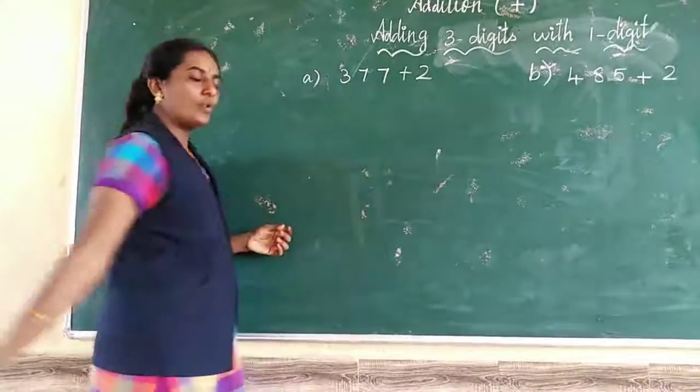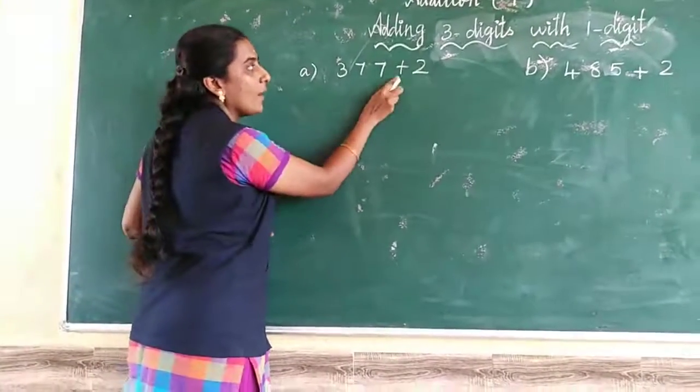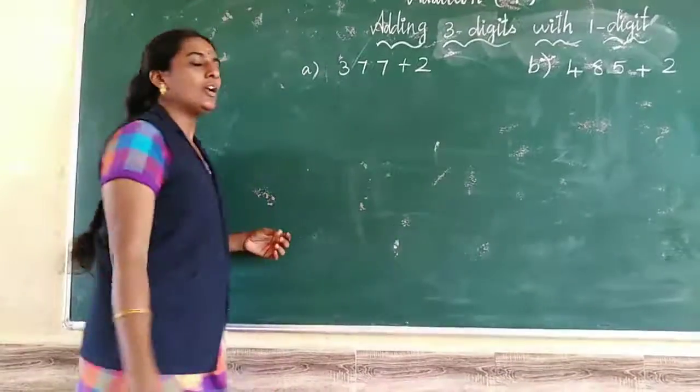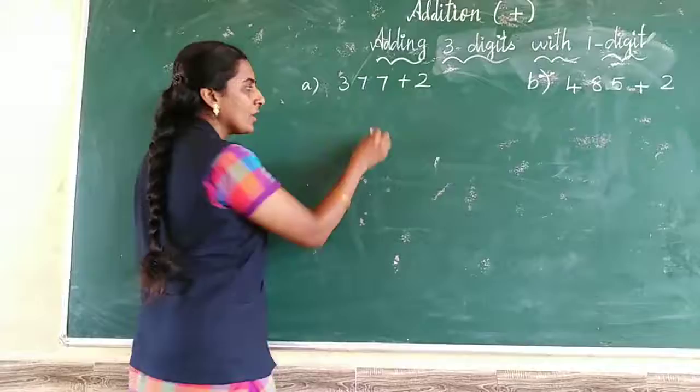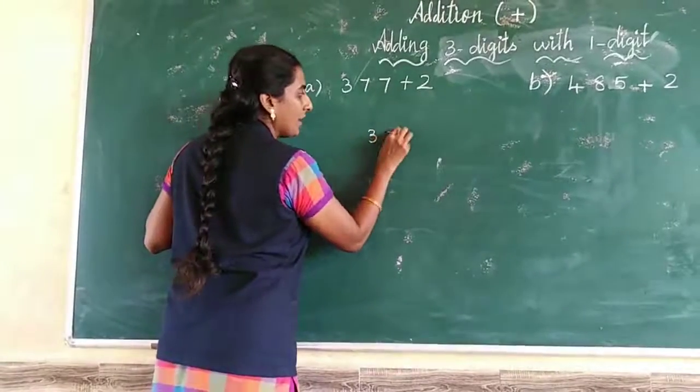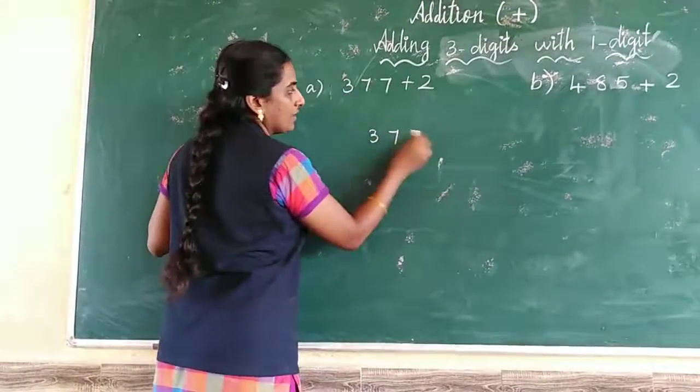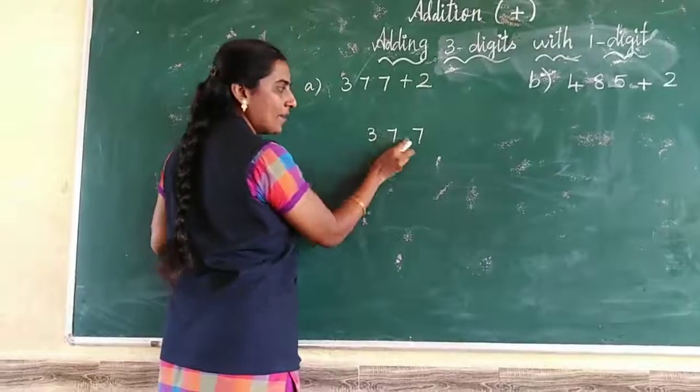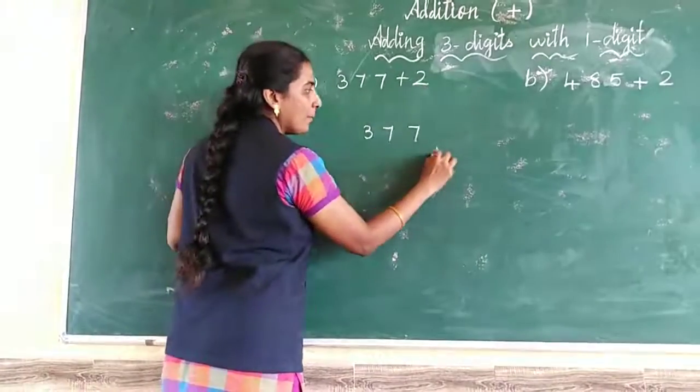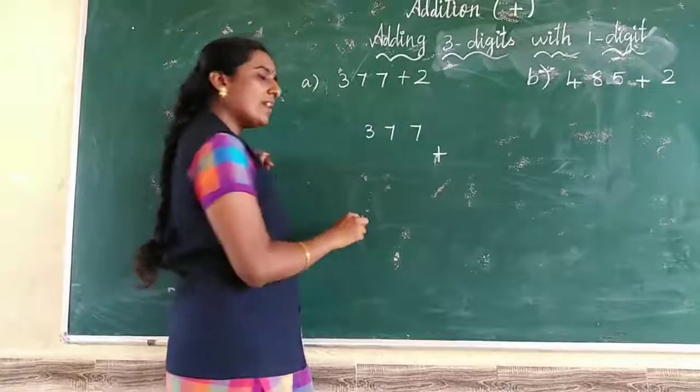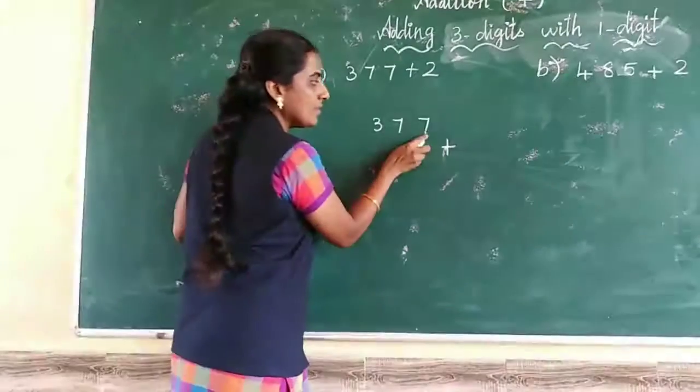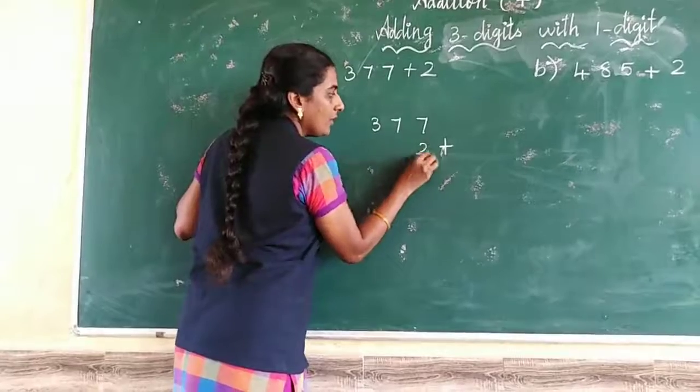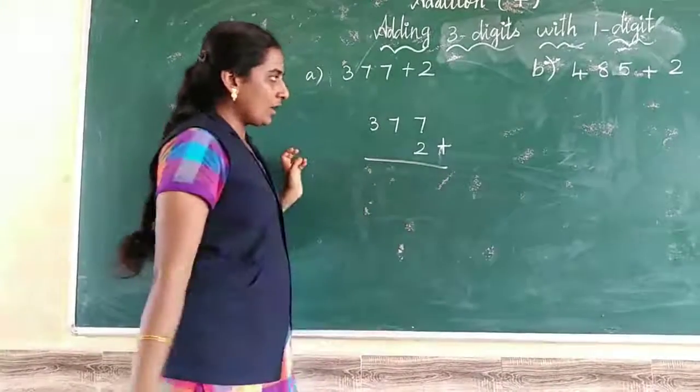377 plus 2. We are doing the column method. First write the first number, 377. Give some gap, then write plus 2. Where do we write the 2? Write it in the ones place. This is the ones place.